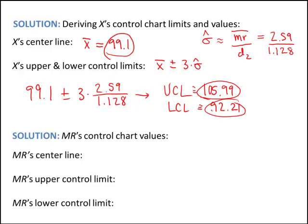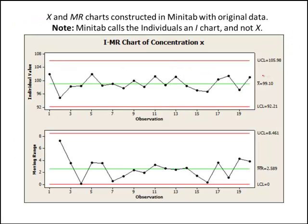Let's take a look at that individual chart — I made this in Minitab before starting this video. Minitab calls the individual chart an I-chart, not an X chart, which is why you see IMR chart. These are the individual points from the first table. The center line is X-bar. Here's the upper control limit and here's the lower control limit as computed. Down here is the moving range chart — notice we only have 19 observations. The absolute value between observations 1 and 2 was 7.2, between 2 and 3 was 3.5, and between 3 and 4 was 0.1.